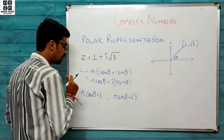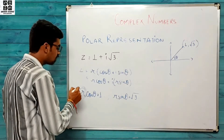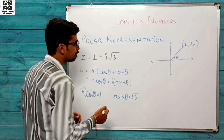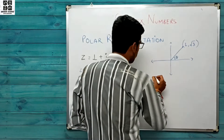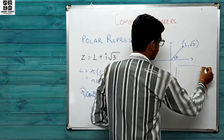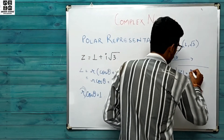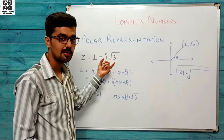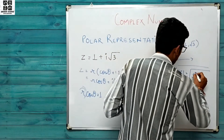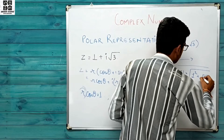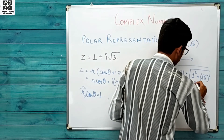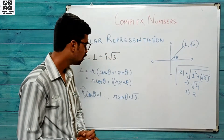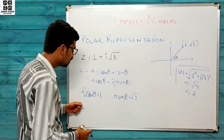Do equations hamare paas aa gayi hain. Ab r calculate karna hai. R is nothing but the modulus of this complex number. Modulus = under root of (real part)² + (imaginary part)² = √(1² + (√3)²) = √(1 + 3) = √4. Toh r ki value 2 hai.